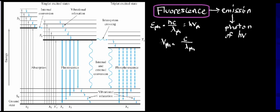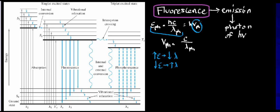Before we go any further, I want to point out some fundamental relationships. In the energy equation, the energy of the photon is in the numerator and wavelength is in the denominator, so high energy corresponds to low wavelength, and low energy corresponds to high wavelength — they are inversely proportional. With frequency, energy and frequency are directly proportional, and frequency and wavelength are inversely proportional. For now, I'll be focusing on energy and wavelength.